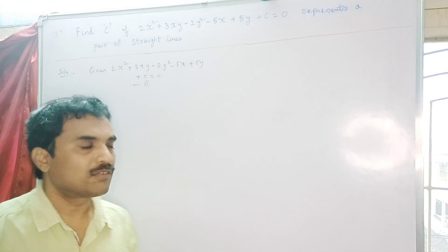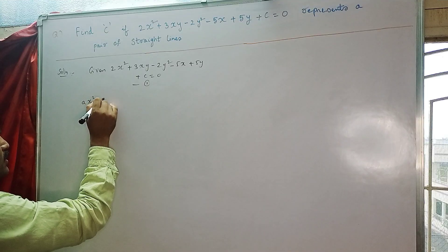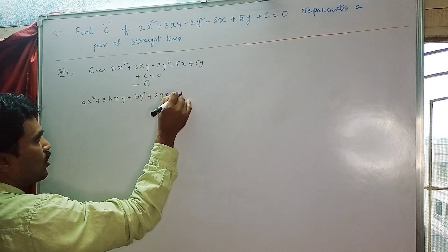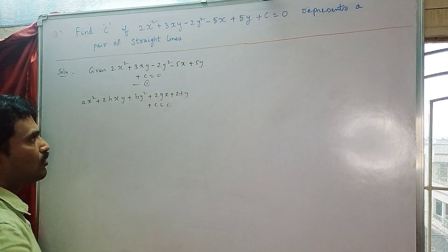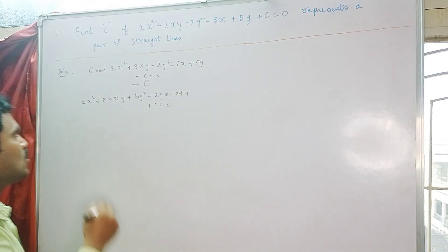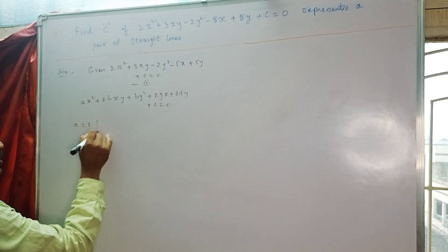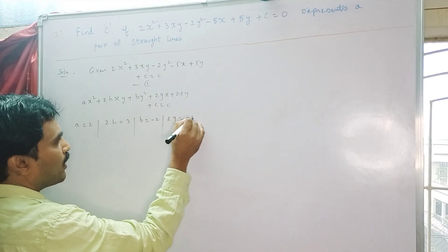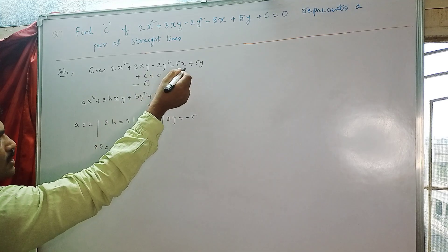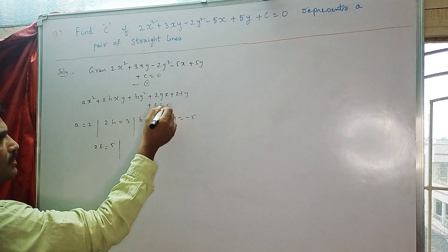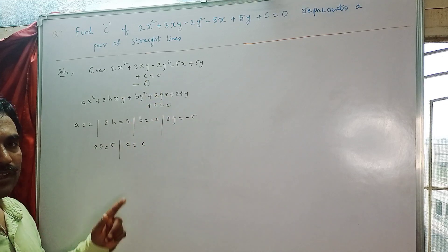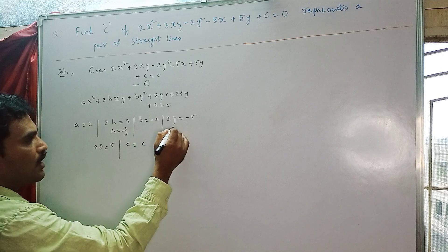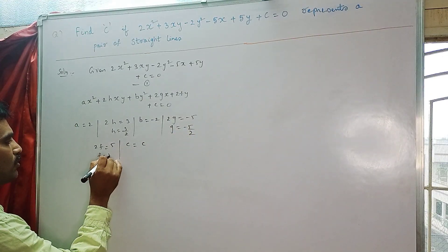The next step is to write the general equation of the conic and extract values by comparison. We get: a = 2, 2h = 3 so h = 3/2, b = -2, 2g = -5 so g = -5/2, 2f = 5 so f = 5/2, and c = c.